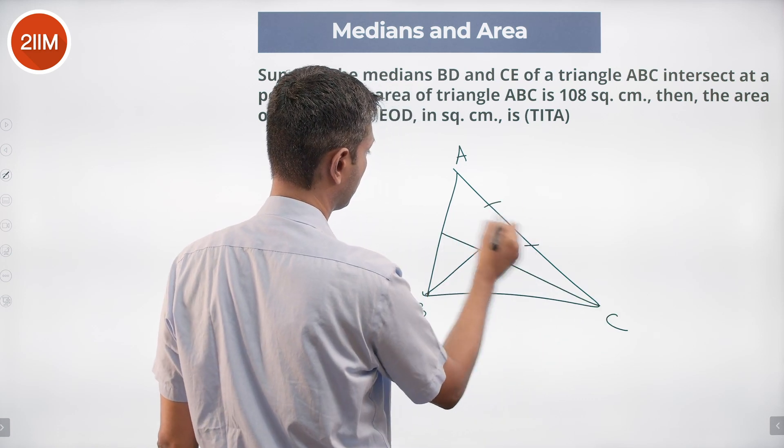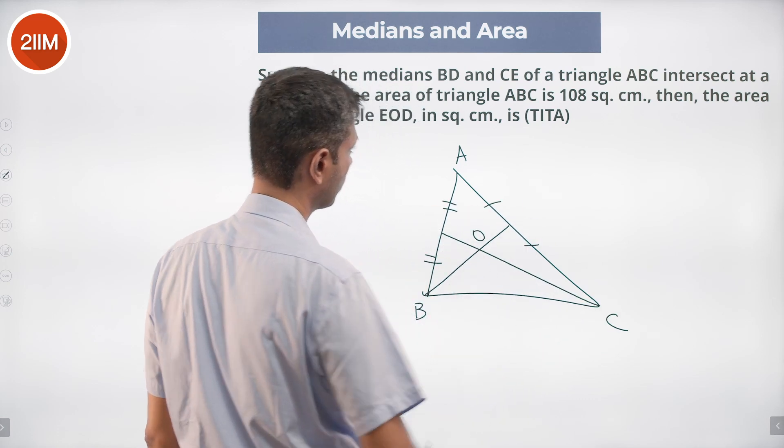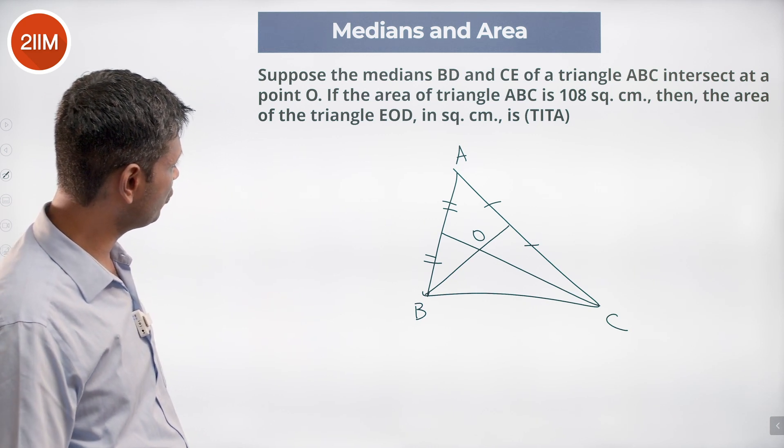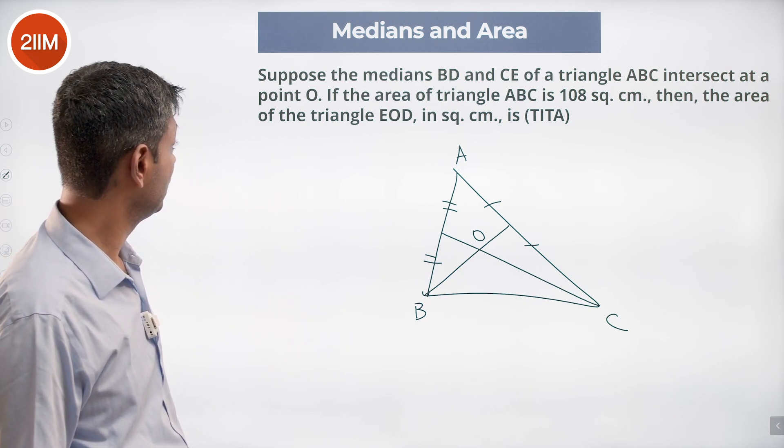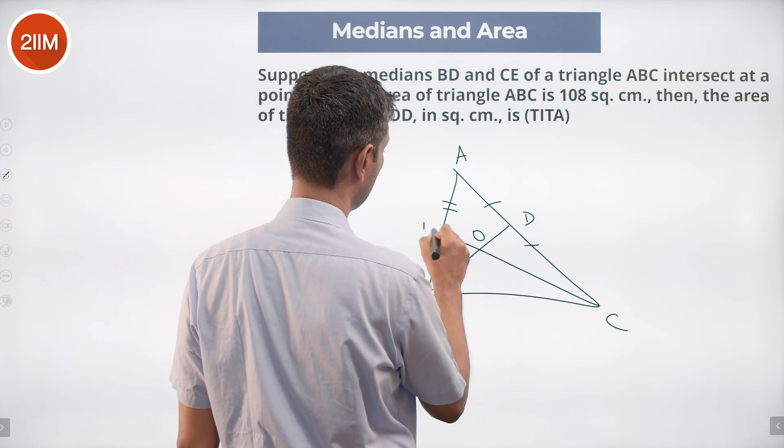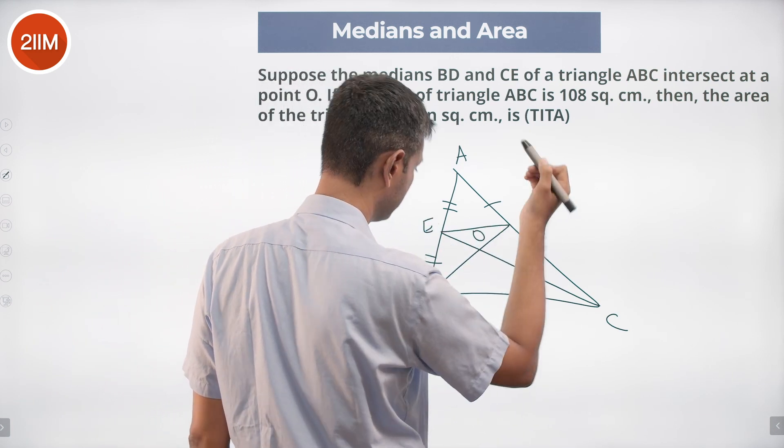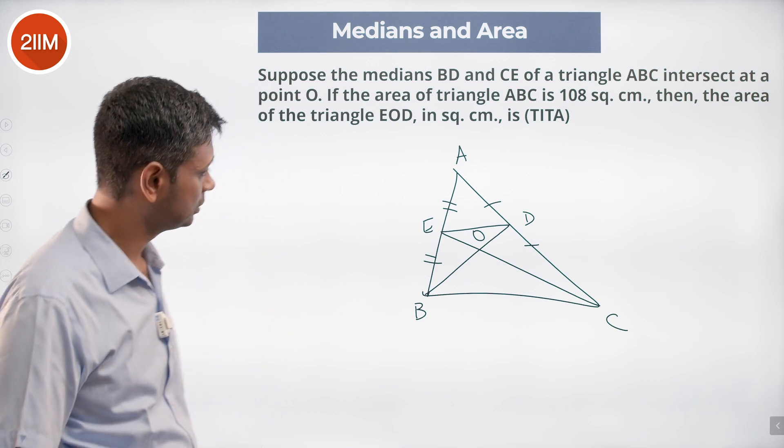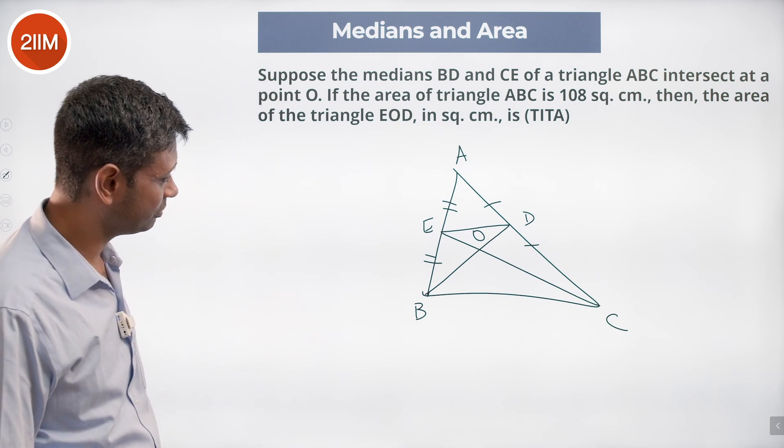The area of triangle ABC is 108 square cm. We want to find the area of triangle EOD. How do we do this? Rather good question.